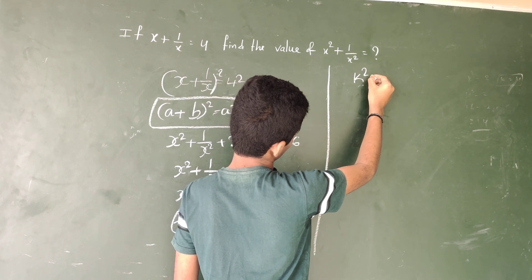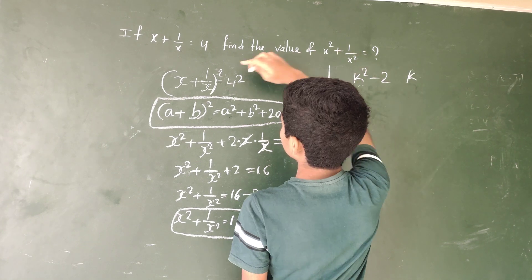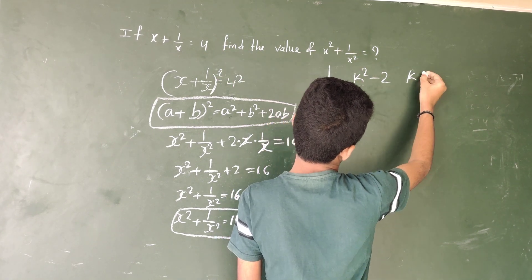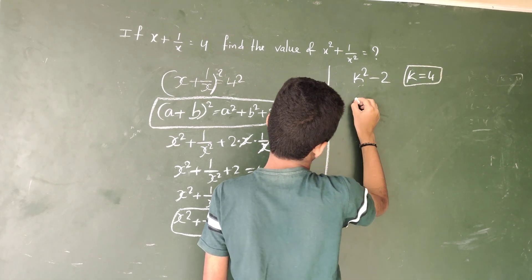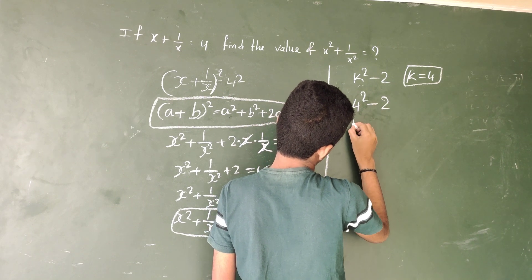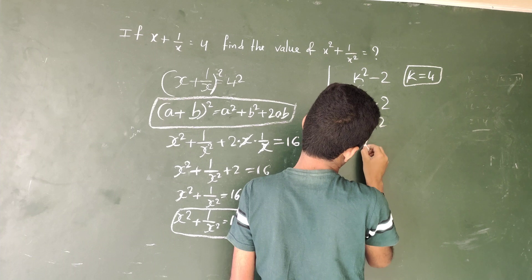k square minus 2. Here, k is constant. x plus 1 by x equal to 4, so k equals 4. 4 square minus 2 is 16. 16 minus 2, answer equal to 14.